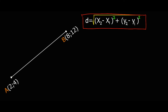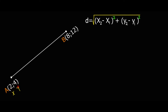We have two points: point A and point B. We have a distance AB. The important thing is we have the coordinates in terms of x and y. For point A, we have two and four — x is two and y is four. And then for point B, we have this x1 and y1.